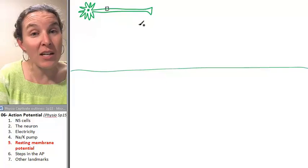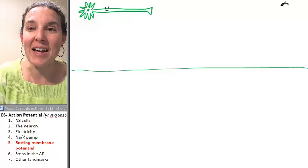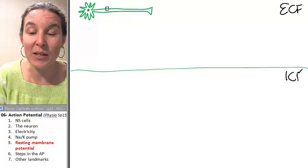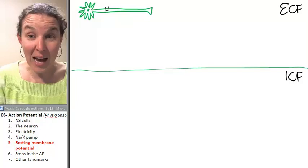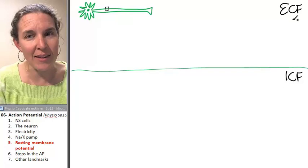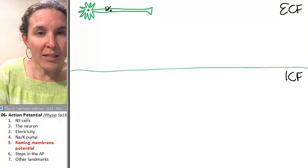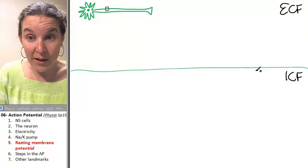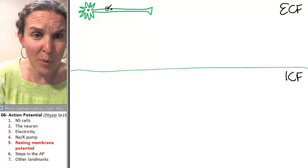A membrane potential is a difference in charge between the extracellular fluid and the intracellular fluid. And we just looked at a molecule that's going to help us establish a difference between the intracellular fluid and the extracellular fluid. And there are a couple of things that we need to know. Notice that I'm just doing a snapshot of a cell membrane, of a neural cell membrane. I'm just blowing up like just this part of it.